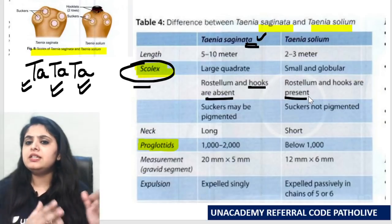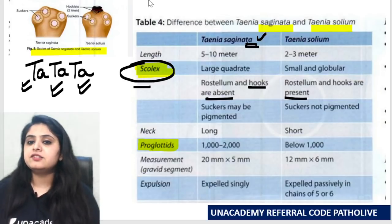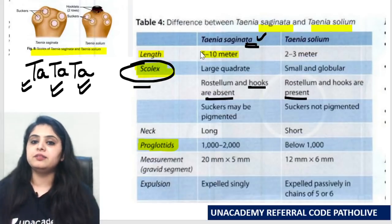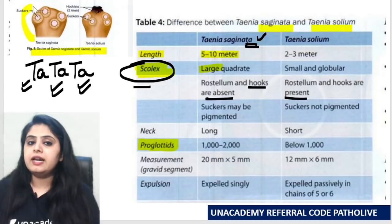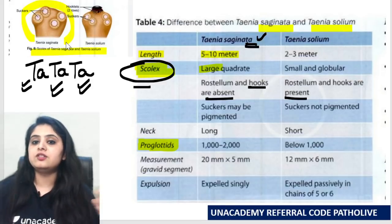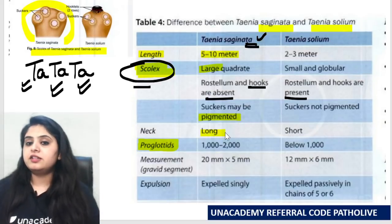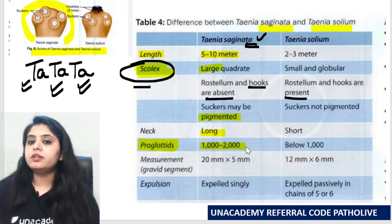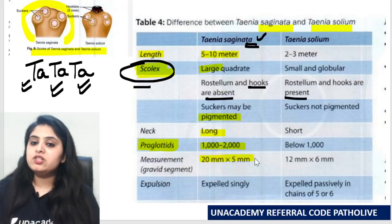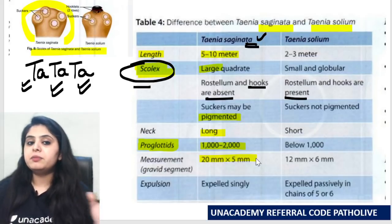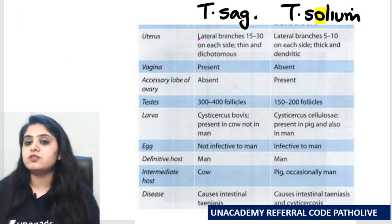Everything for Taenia saginata is going to be more. Saginata is a bigger word than solium — so saginata, long word, long organism. Which has a larger head end, larger scolex? Saginata. Which suckers can have pigment? Saginata. Longer neck? Saginata. More number of proglottids? Saginata. Overall measurement more of the gravid segment? Saginata. All these measurements are becoming more in saginata.